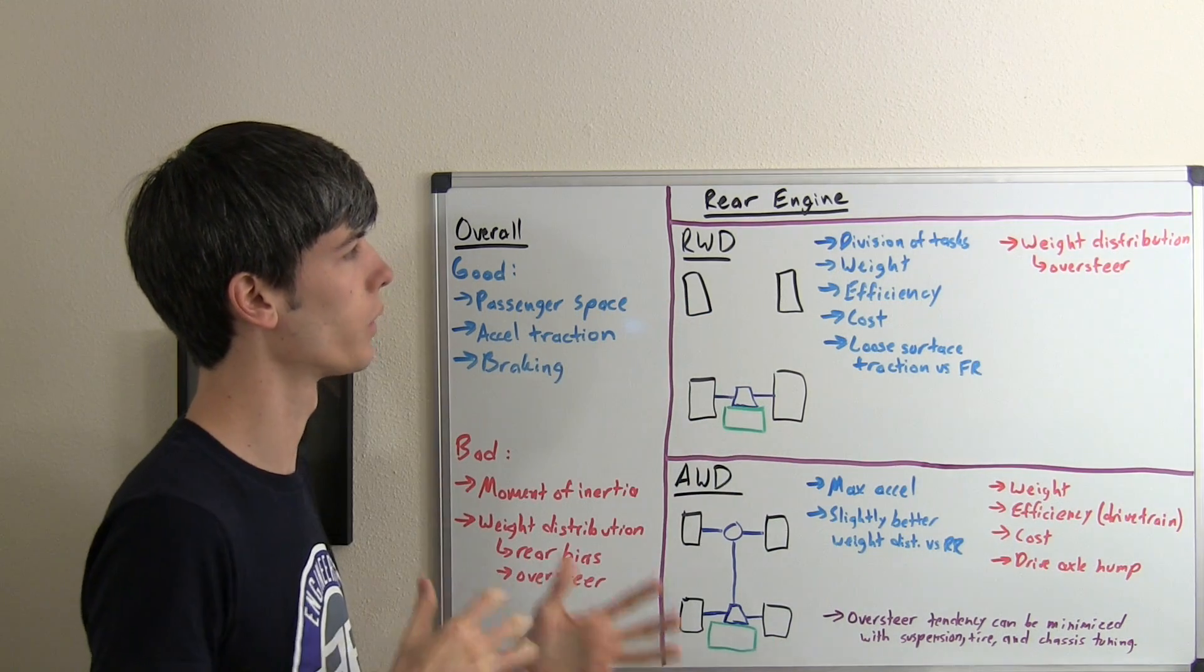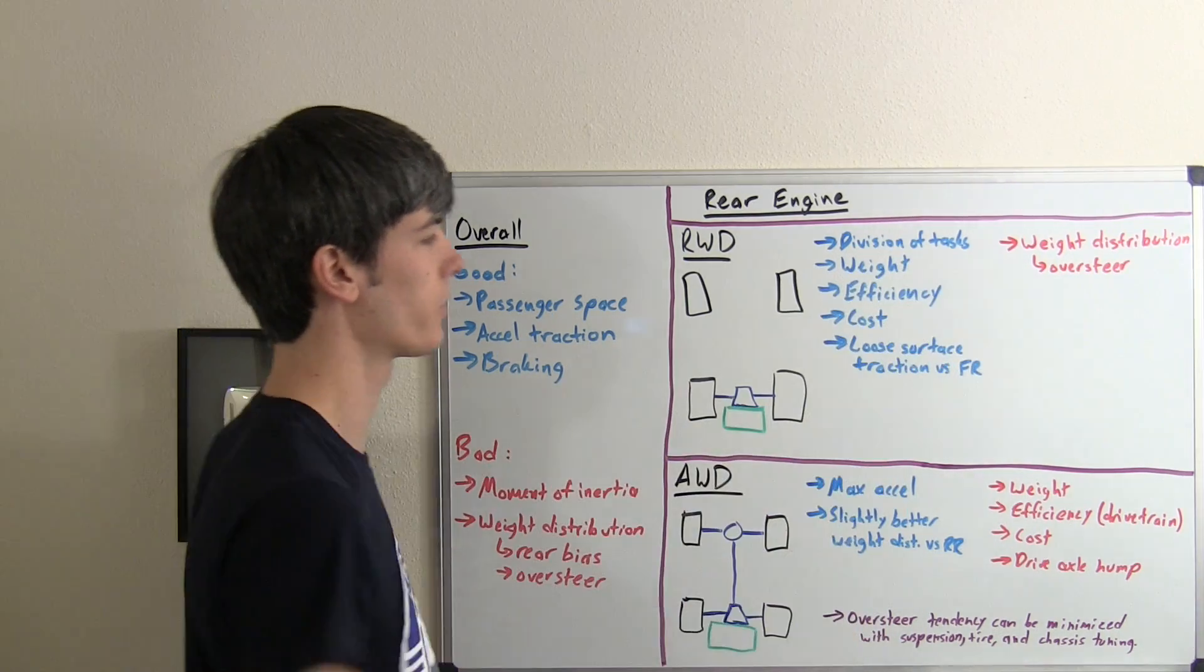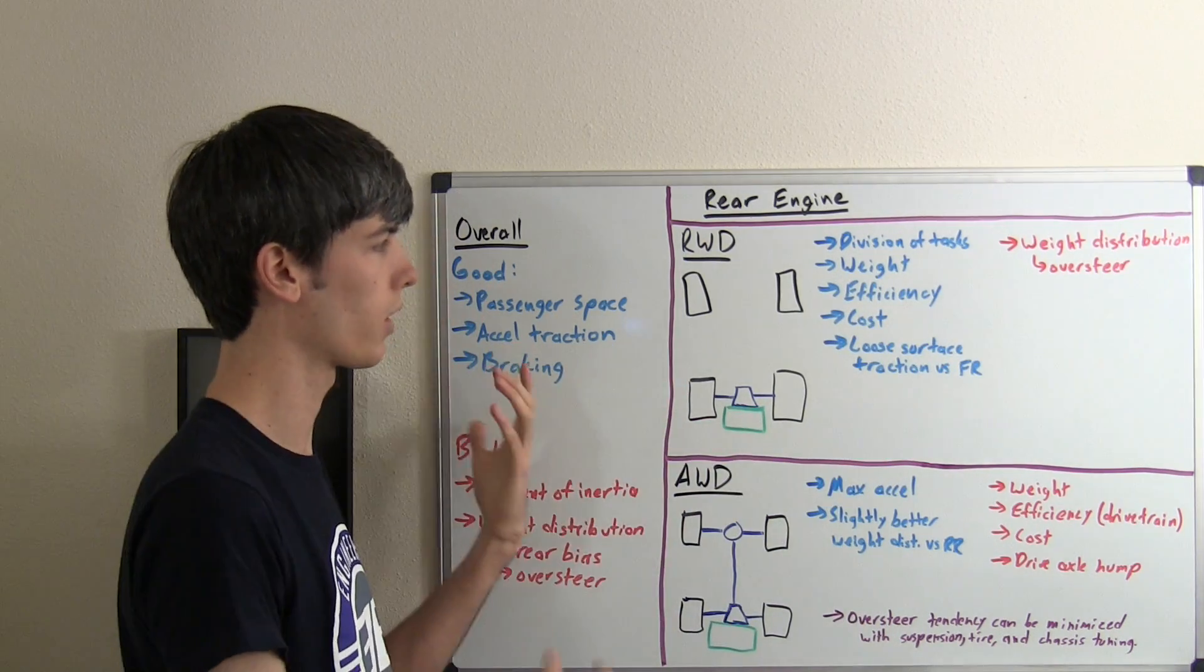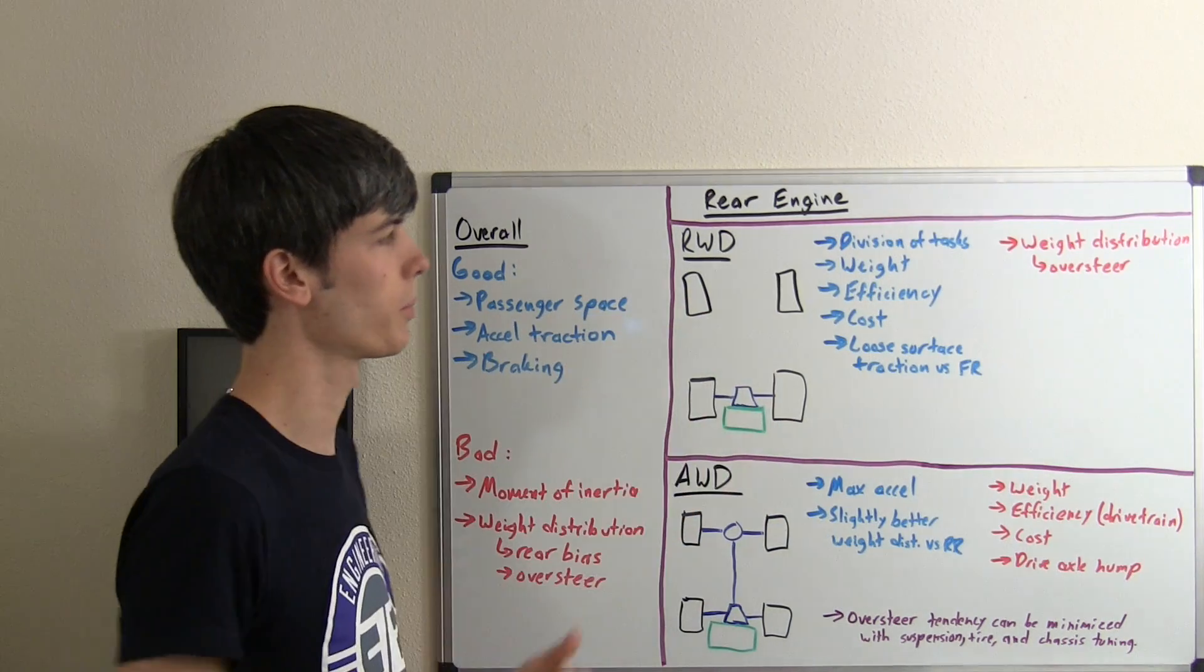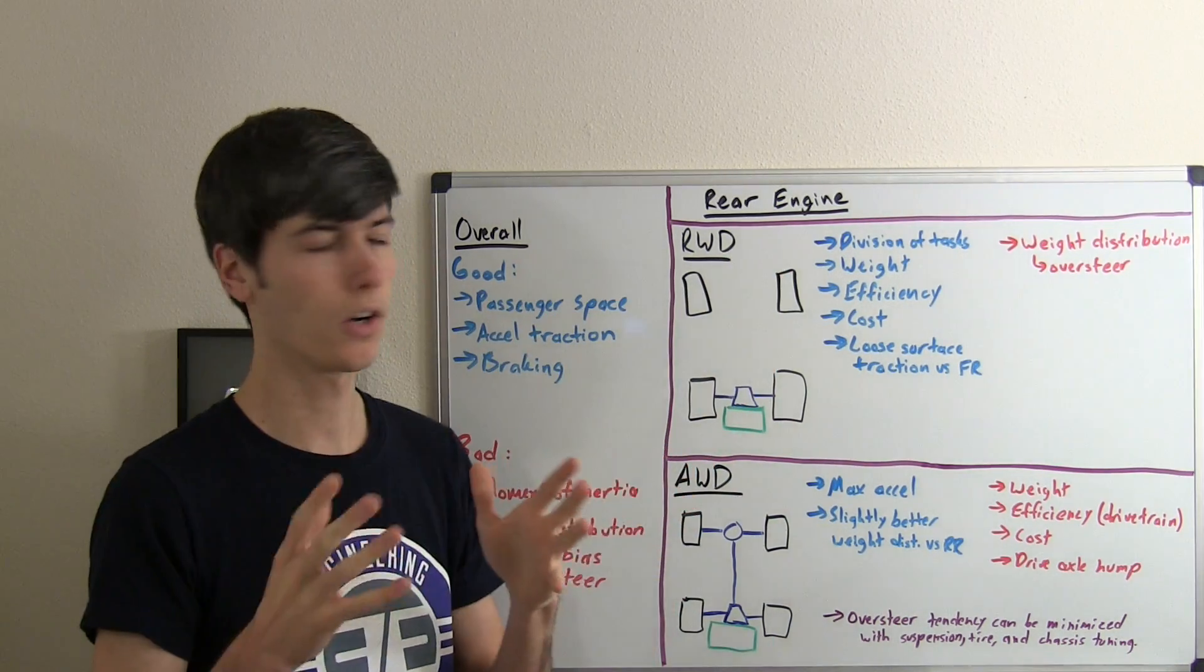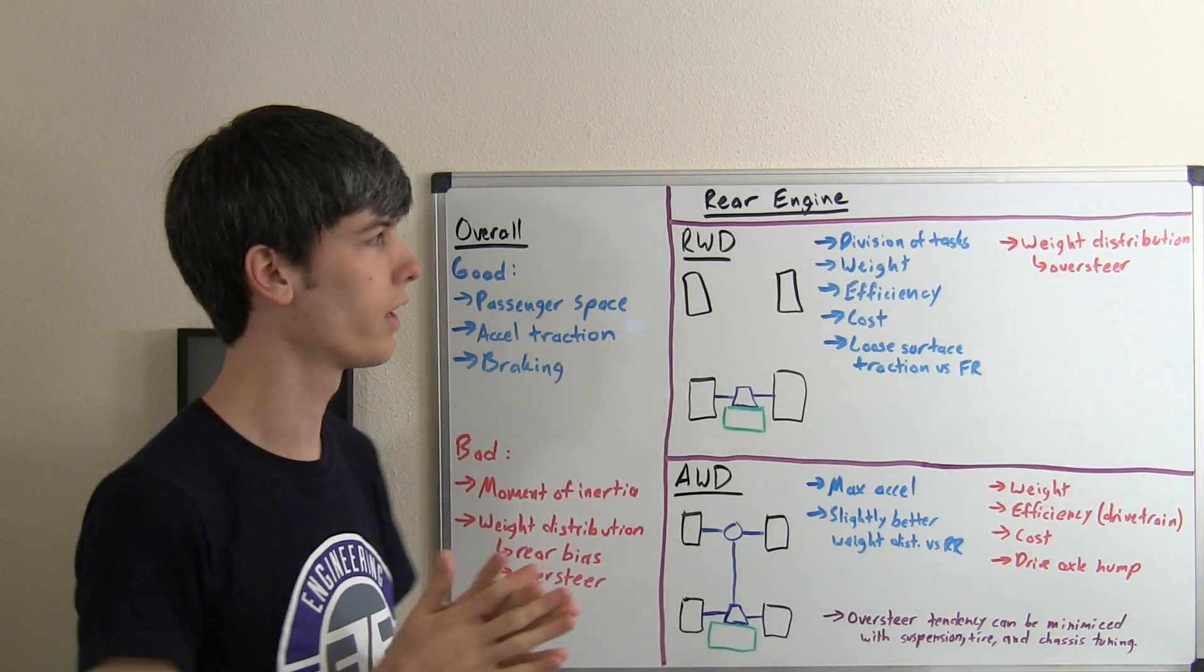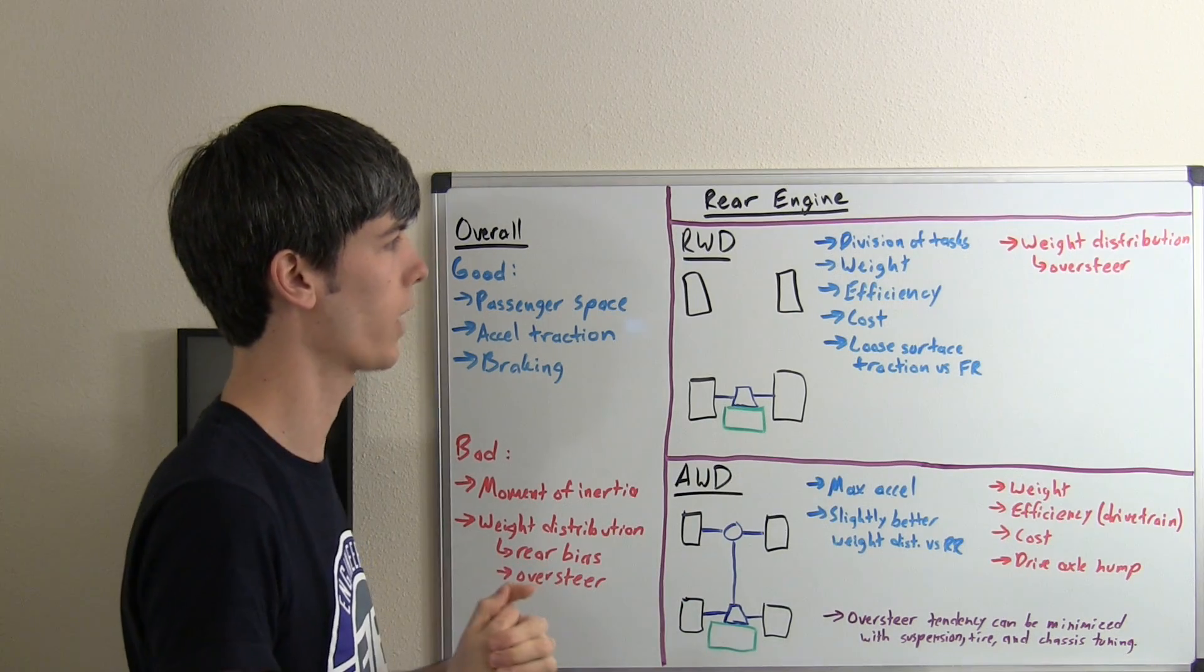So let's talk about rear-wheel drive using a rear engine. One of the great things about it is you're going to have a good division of tasks. The braking is going to be well distributed between the front and the rear. You've got your front doing the turning, and the rear doing the accelerating. You're keeping your loads on your tires even, which overall is going to help with traction.